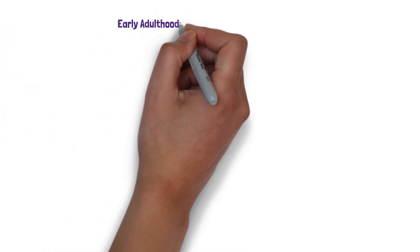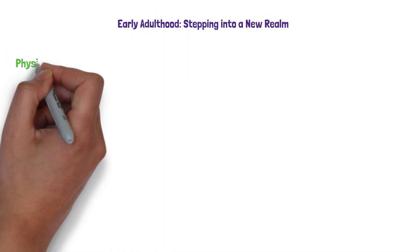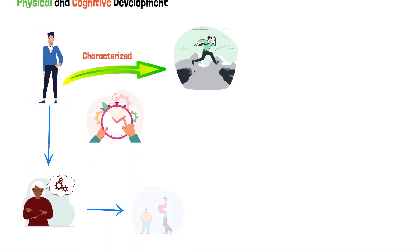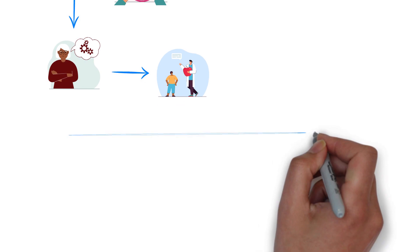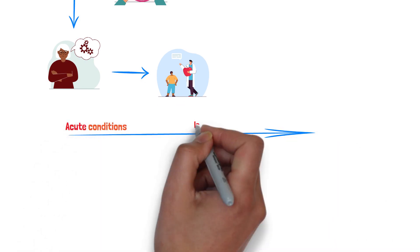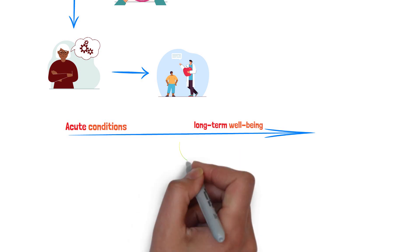Early adulthood, stepping into a new realm. Physical and cognitive development. Early adulthood is often characterized by physical peak and stability, but it's also a time when individuals start to notice subtle signs of aging. Health concerns shift from acute conditions to the importance of maintaining long-term well-being through lifestyle choices.